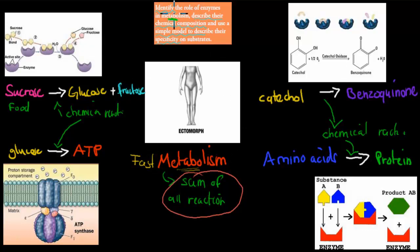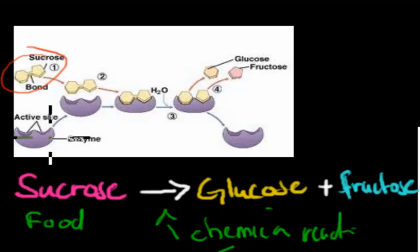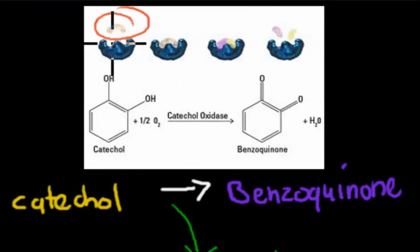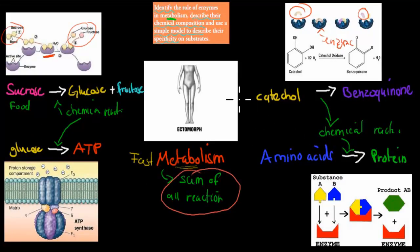When we talk about the dot point — identify the role of enzymes in metabolism — what is the role of enzymes in these chemical reactions? Here we have sucrose turning into glucose and fructose, and right here there are enzymes. The enzyme actually makes this happen and speeds it up. So the role of enzymes is to speed up those chemical reactions.